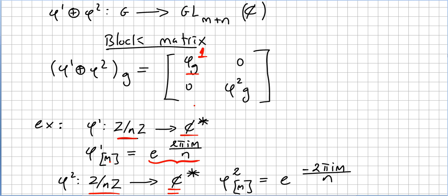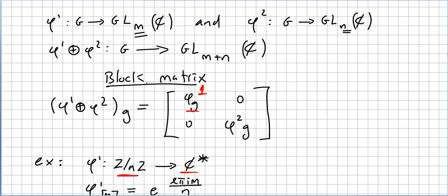Since representations are a special kind of homomorphism, if the group G is generated by a set X, then for this representation φ we are going to use the values on X that generate G. So we are going to use the generators — if a group has generators, we will use that fact in the next videos.